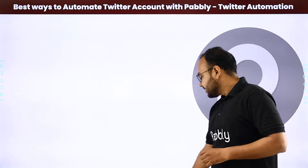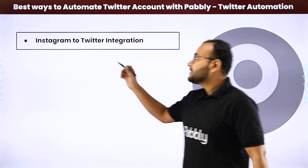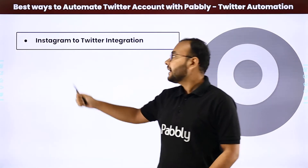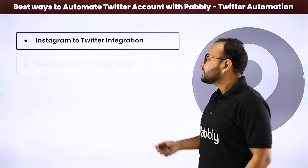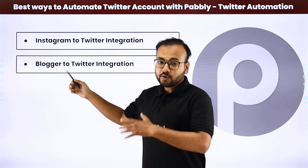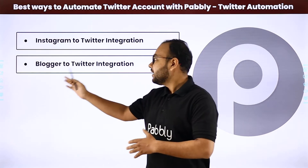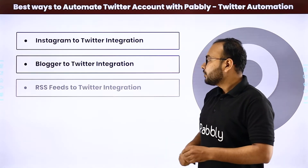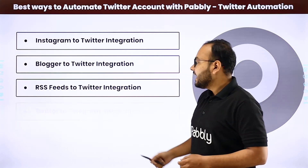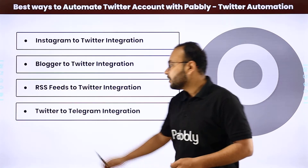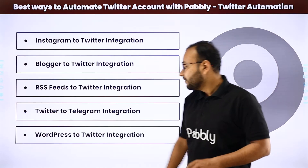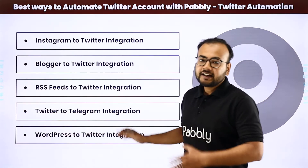The first automation we have is Instagram to Twitter integration, where we connect Instagram with Twitter. Next is Blogger to Twitter integration, then RSS Feeds to Twitter, then Twitter to Telegram integration, and last but not least, WordPress to Twitter integration.